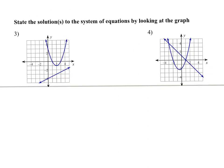Alright, so these two we're just going to solve the system by looking at the graph. On number 4, it's pretty clear that those are our solutions. So this is going to be negative 3 comma 4, and also 1 comma 0.